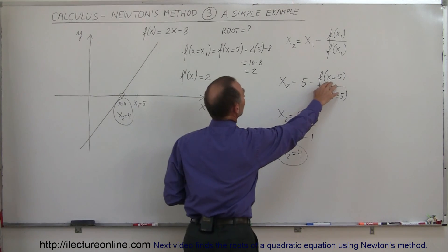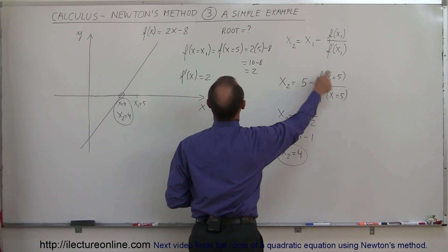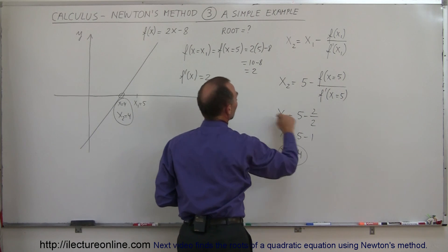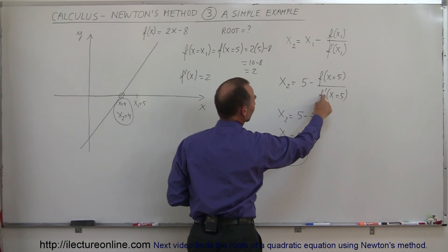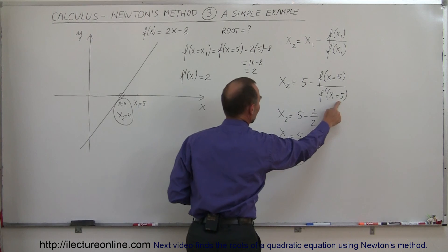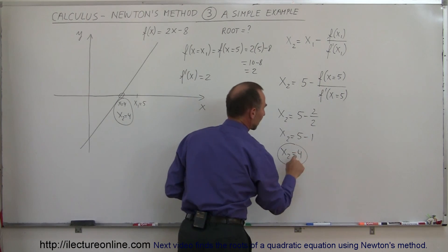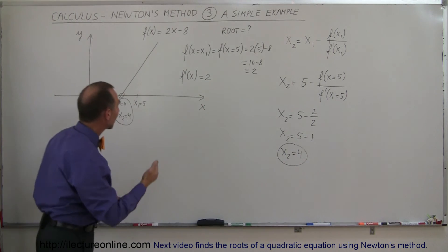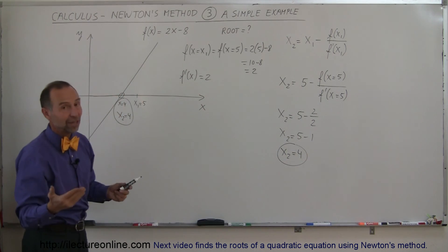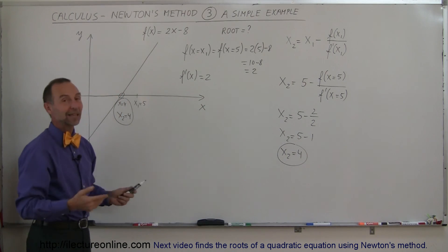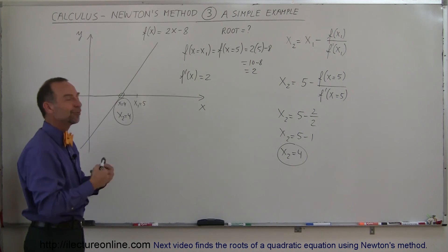You find the function, you evaluate the function at your first trial point, when we do that we get a number, we then find the derivative function and evaluate it at our first trial point, and we get a number, we plug those two numbers in, we calculate a new value for x, and that usually gets us closer to the root, or in this case it gets the exact root, and that's how Newton's method works.